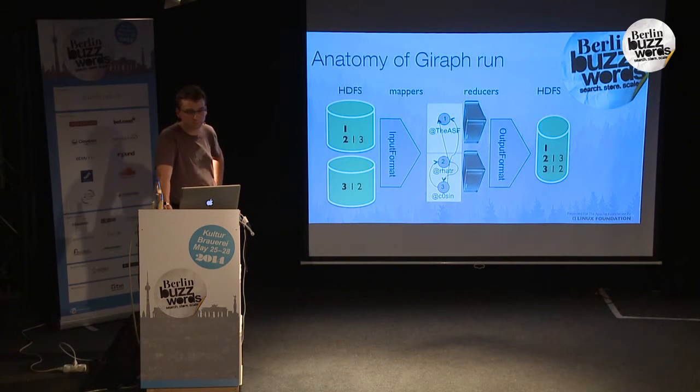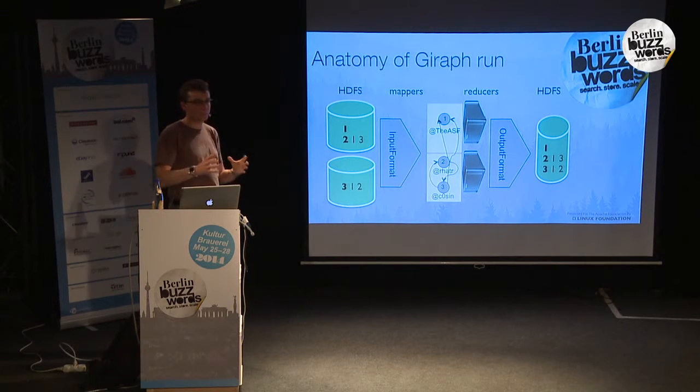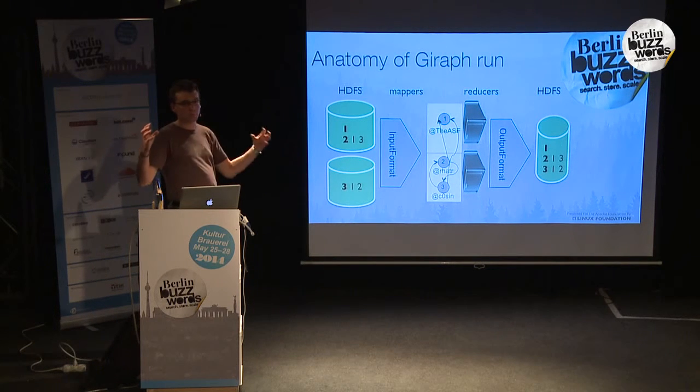Question: you mentioned that as a graph grows linearly, the number of relations grows exponentially — what does that mean? If you double the number of nodes in your graph, the potential number of connections grows exponentially — or more precisely, quadratically.